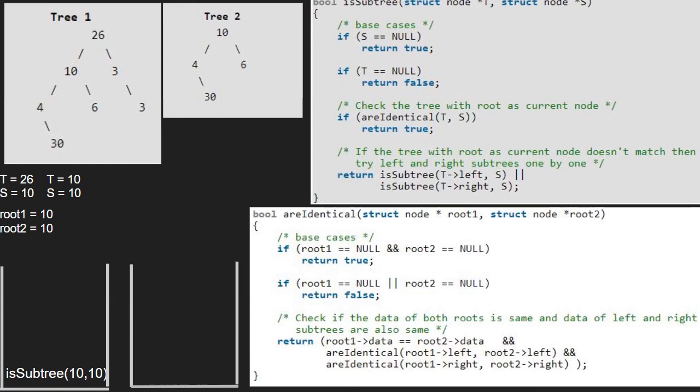Now, in the isSubtree function, we finish execution and return true as we have found the subtree in tree2.